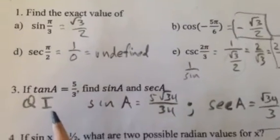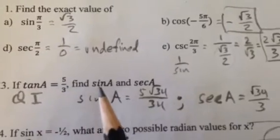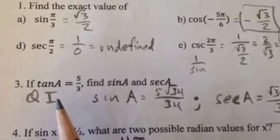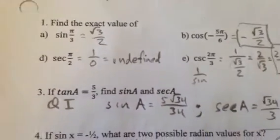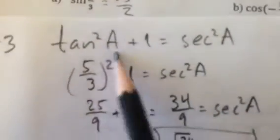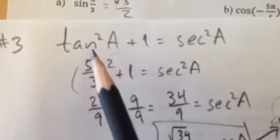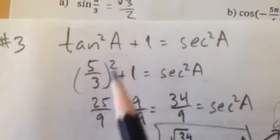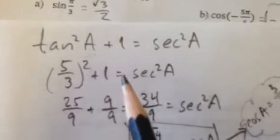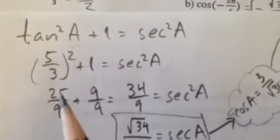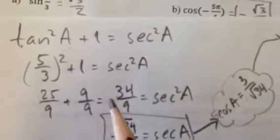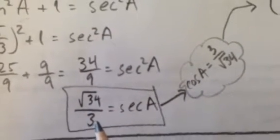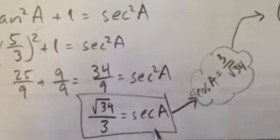Moving on to the next problem, which is, strangely, number 3. If the tangent of A equals 5/3, find the sine of A and the secant of A, and we're using quadrant 1 for angle A. I'm going to use this identity right here to figure this out. I'm given the tangent as 5/3. So I'm going to replace the tangent squared of A with 5/3 squared. 5/3 squared plus 1 equals secant squared. That's what it looks like. So that's 25 over 9. 1 is 9 over 9. So that gives me 34 over 9. That's the secant squared. So I take the square root, and I get square root of 34 over 3 equals the secant of A.